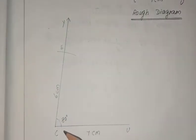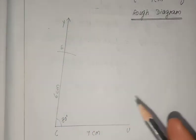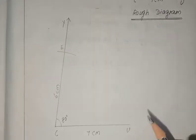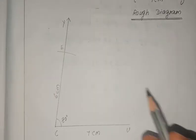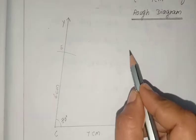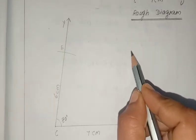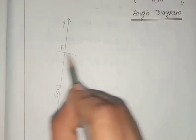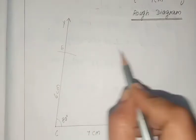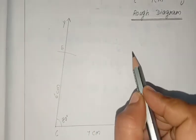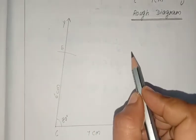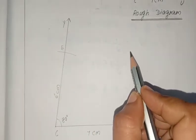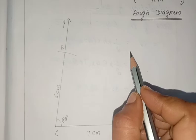Now we have to find TE equal to 5 cm. TE will come here, but it is not possible to draw an arc directly. For that, first we have to draw the parallel line.